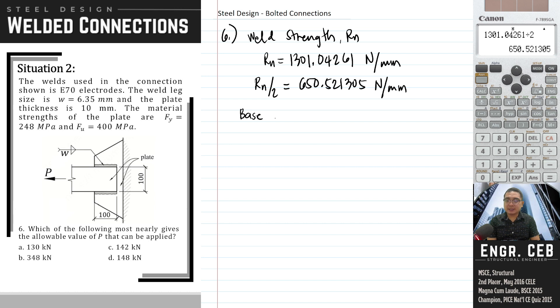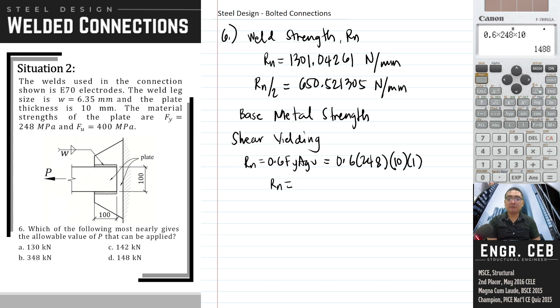And then compute the base metal strength. For base metal strength, there are two sources: shear yielding, which is 0.6 FY AGV. So compute this: 0.6 times 248 times AGV. Based on the thickness of the member, and since the thickness is the same, we solve once. So 10 times 1 unit length. So the RN for shear yielding is 1,488 Newtons per millimeter.